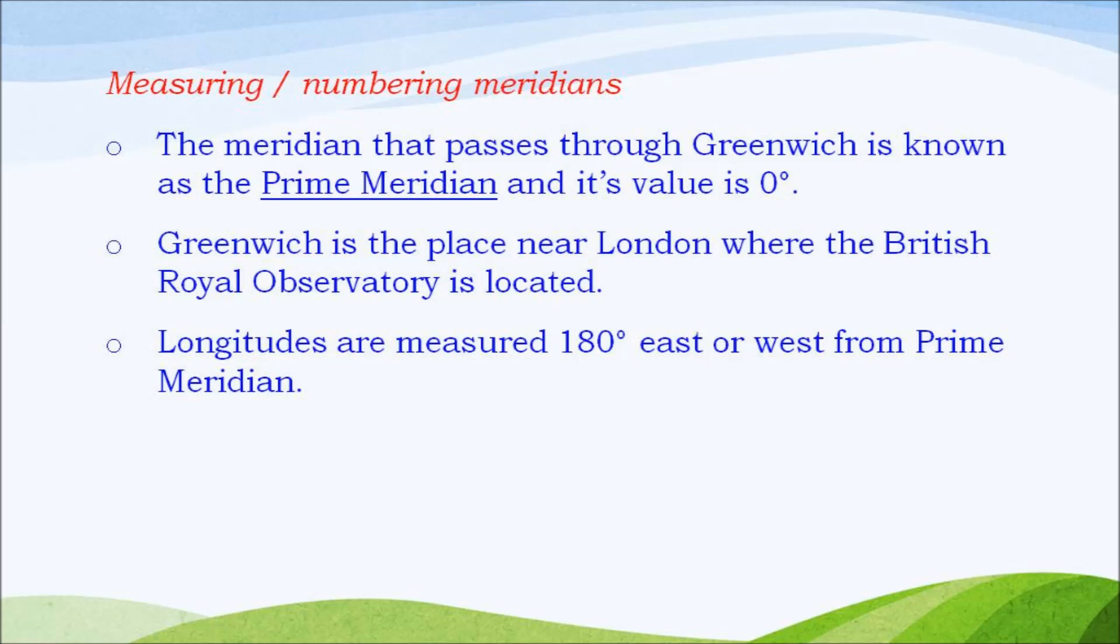The meridian that passes through Greenwich is known as the prime meridian and its value is 0 degrees. Greenwich is the place near London where the British Royal Observatory is located. Longitudes are measured 180 degree east or west from prime meridian.